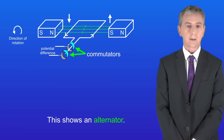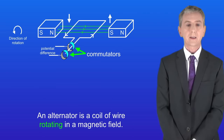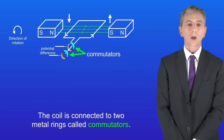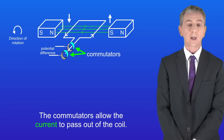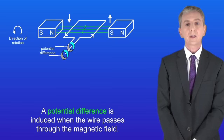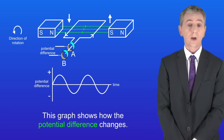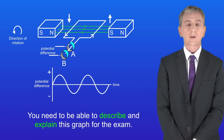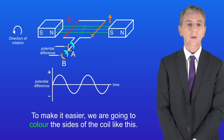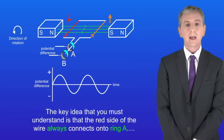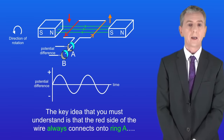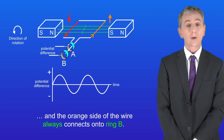Here is an alternator. An alternator is a coil of wire rotating in a magnetic field. The coil is connected to two metal rings called commutators, which allow the current to pass out of the coil. A potential difference is induced when the wire passes through the magnetic field. To make it easier we're going to colour the sides of the coil, and the key idea is that the red side of the wire always connects onto ring A, and the orange side always connects onto ring B.